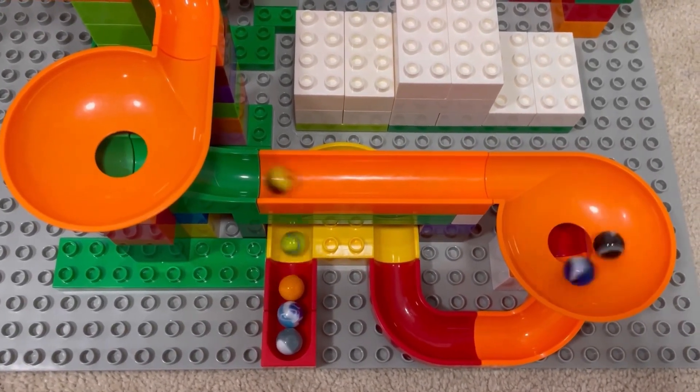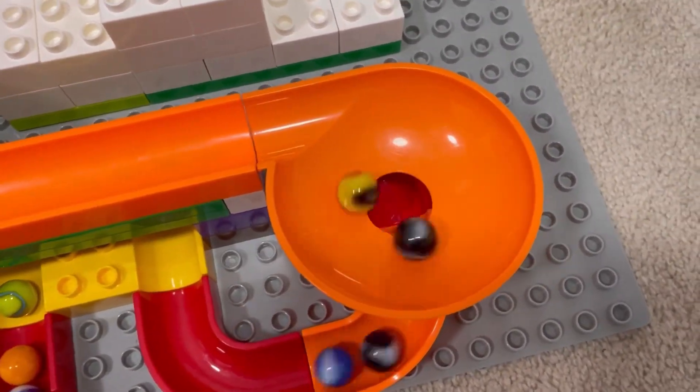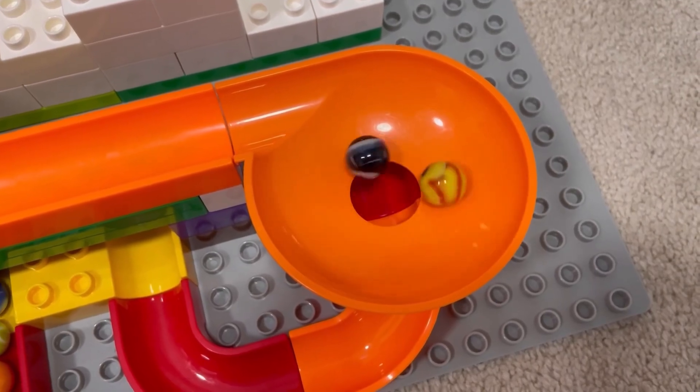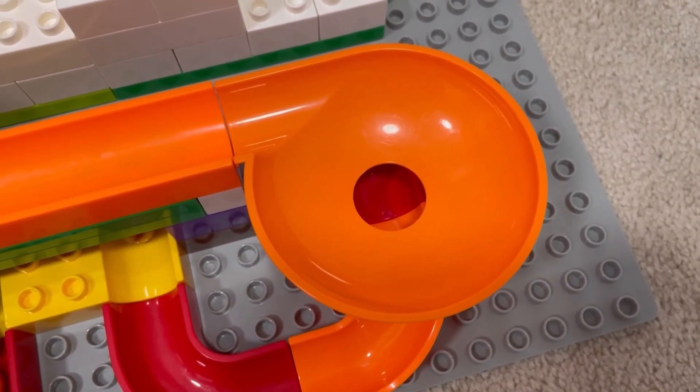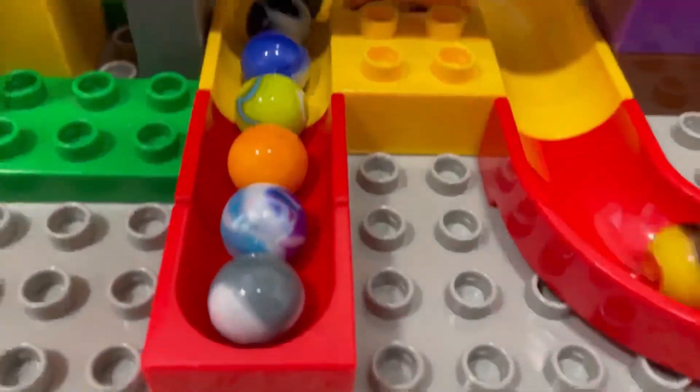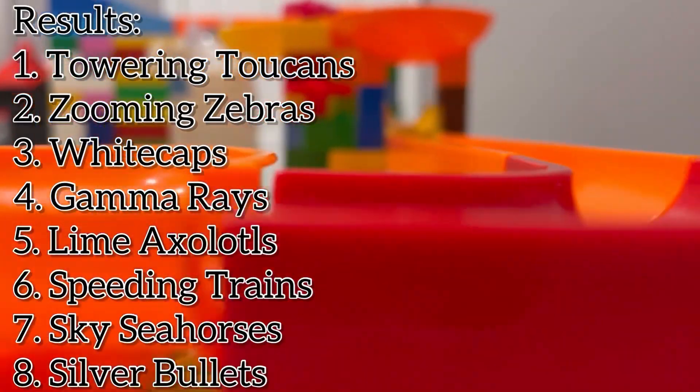Gamma Rays holding on just for long enough to be moving on. Whitecaps are also out now, as well as the Zooming Zebras. Towering Toucans will be winning this heat. Great job. As they will be moving on alongside the Zooming Zebras, the Whitecaps, and the Gamma Rays to the finals.